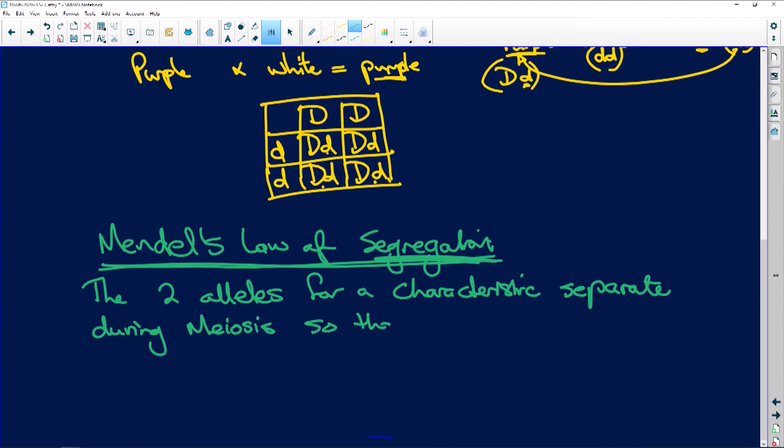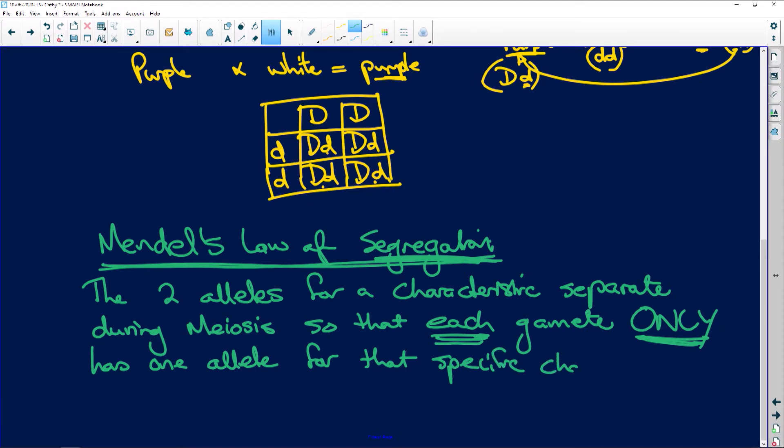So that each gamete only has one allele for that specific characteristic. And it's exactly what we did here. There are your two alleles. And here are your two alleles. And what happens? These two alleles separate. So you're going to have D will go into the one gamete, and D goes into the other gamete.